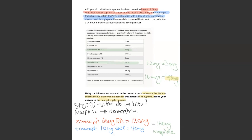We know that oral morphine 10 milligrams is equal to 3 milligrams of diamorphine. So to get from 10 milligrams of morphine to 160, we need to multiply by 16. So that's what we need to do for the diamorphine as well. If it's 3 milligrams, times that by 16, and that gives you 48 milligrams.